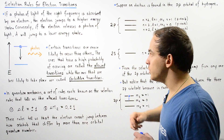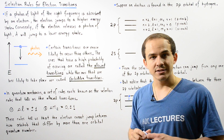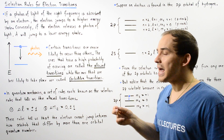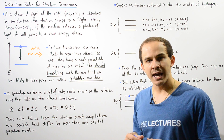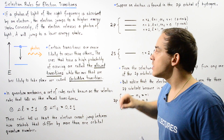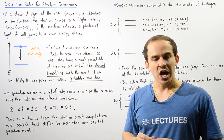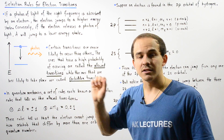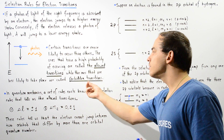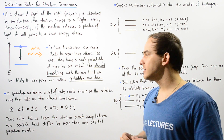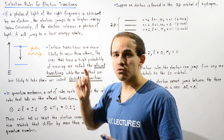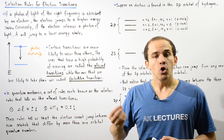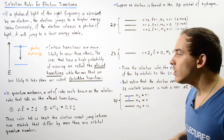In quantum mechanics, we know that certain electron transitions are more likely to take place than others. The ones that have a high probability of taking place are known as the allowed transitions, and the transitions that are very improbable — the ones less likely to take place — are known as the forbidden transitions. A set of rules known as the selection rules exist that tell us which transitions are the allowed transitions.